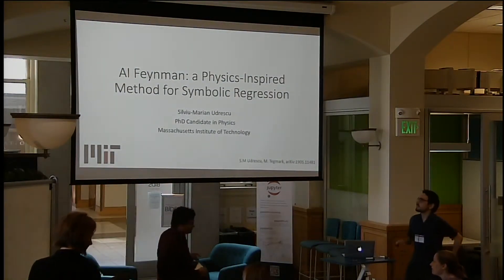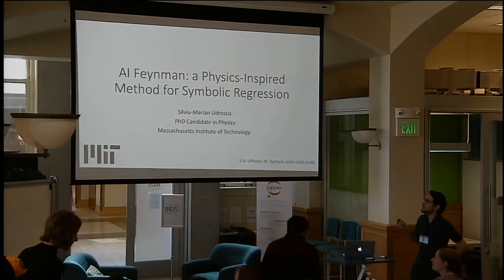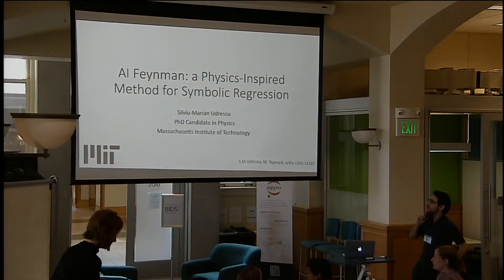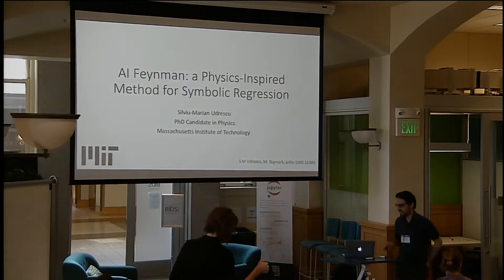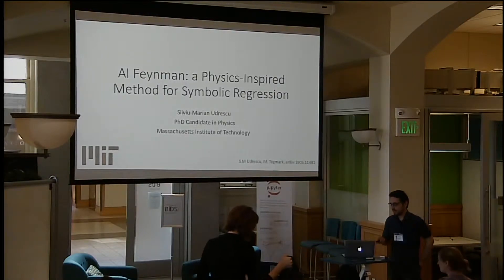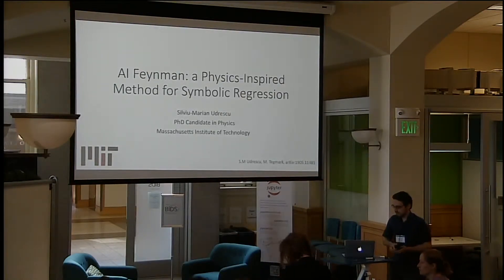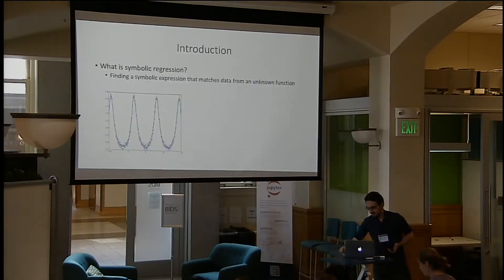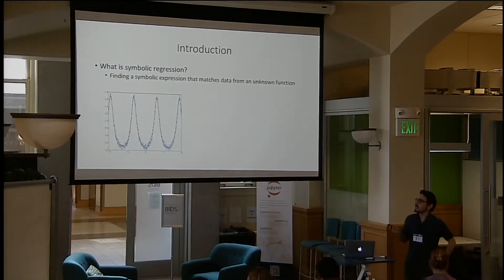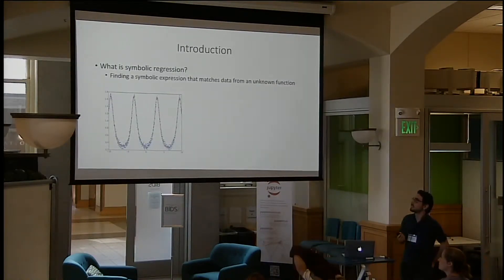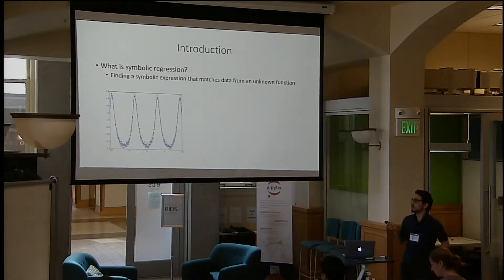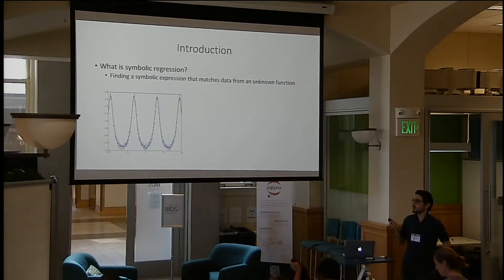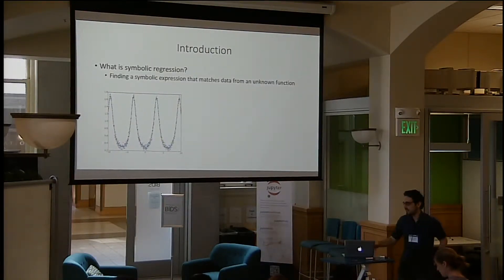The goal of this project was to tackle symbolic regression using physics-inspired methods. The paper appeared on Archive yesterday. Symbolic regression represents the task of finding a symbolic expression that matches data from unknown functions. Throughout history, this proved to be a useful task for developing physics.